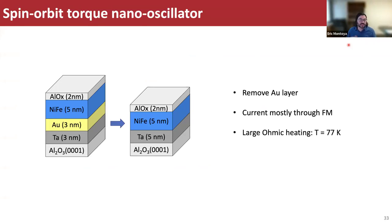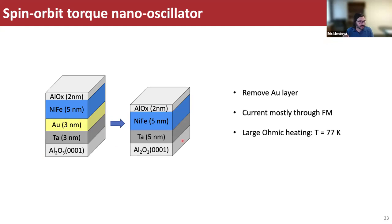We also look at microwave emission to demonstrate a spin torque nano oscillator. For these devices, we remove the gold insertion layer — the nickel-iron/tantalum interface has a good spin mixing conductance from broadband FMR studies, and the tantalum layer acts as a good spin sink. Removing the gold layer means more current flows through the ferromagnet, which is important since the spin orbit torque is due to spin currents induced in the ferromagnet. The next measurements are all done at 77 K because we apply large current densities and have large heating.